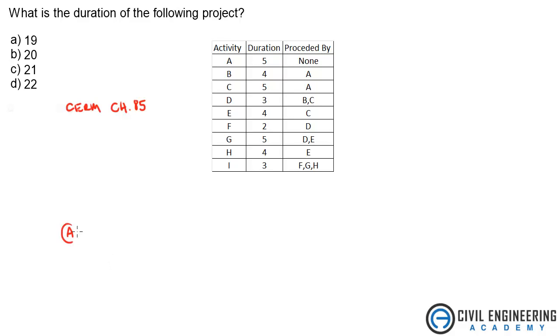So here's activity A and I'll write the activity and the duration above it. And so we know this duration is five days and nothing is preceded by it. If we go to B it says it is preceded by A. So we're going to go to B and draw something like this. Here's B. And C is preceded by A. So let's go to C.